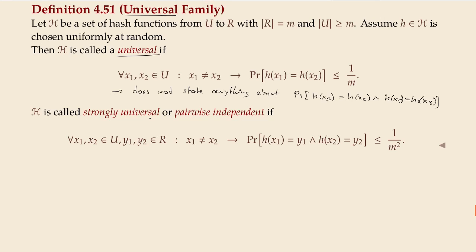Strongly universal is a stronger statement because it quantifies over all different bin indices, whereas the basic universal definition only considers whether two elements collide. It's not always easy to construct cases where universal holds but strongly universal fails, but one thing is clear: strongly universal always implies universal.